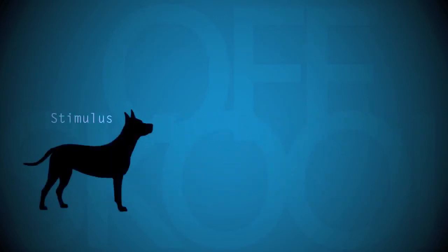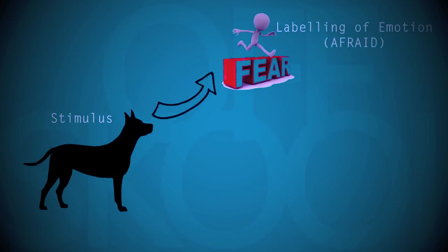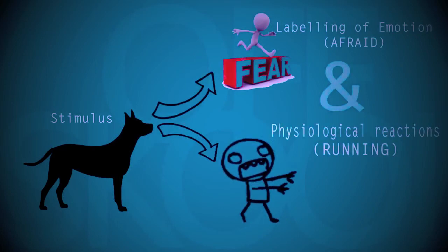Let's apply this theory in a real-life example. Suppose I am afraid of dogs. The Cannon-Bard theory suggests that my emotional reaction, my fear, would be separate from my physical reaction, my running.